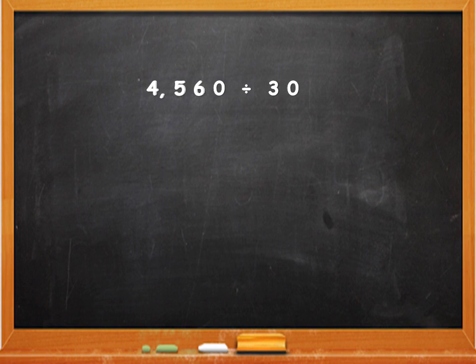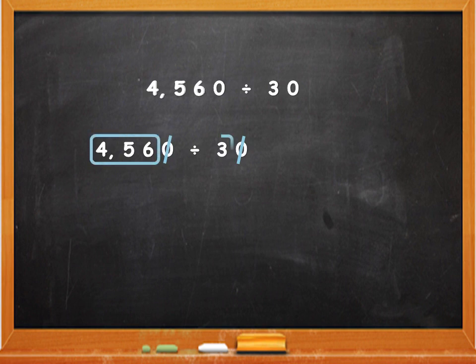Likewise, if the dividend has only one 0 in the end then even if the divisor has more than one 0, only one can be cancelled from both the dividend and the divisor. Always remember this important point. Let's continue with the sum. Cancel the 0 in the divisor and the 0 in the dividend and divide 456 by 3.